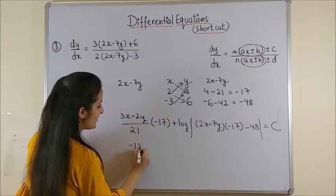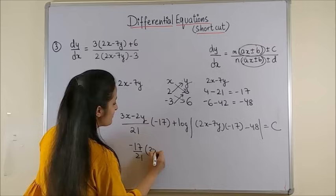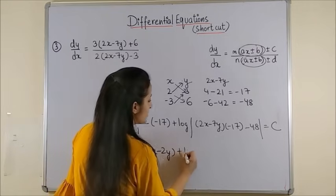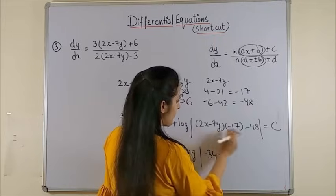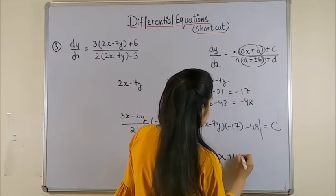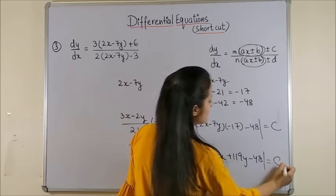You can get this to be minus 17 by 21 3x minus 2y plus log mod minus 34x. I'm opening this you get plus 119y minus 48 equal to c.